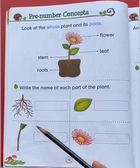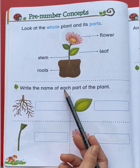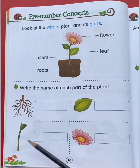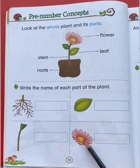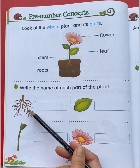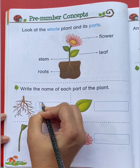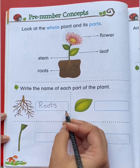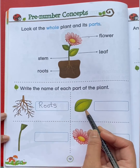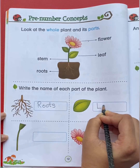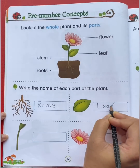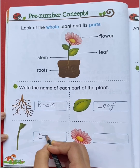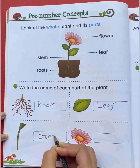Now let's read the question. Write the name of each part of the plant. These are roots. This is a leaf. This is stem.